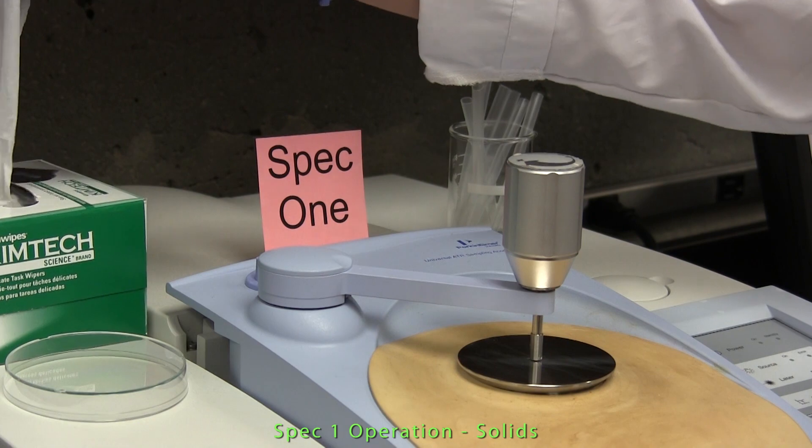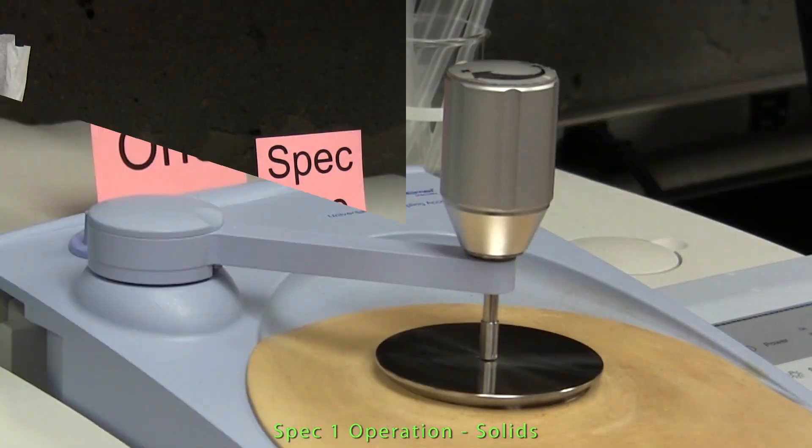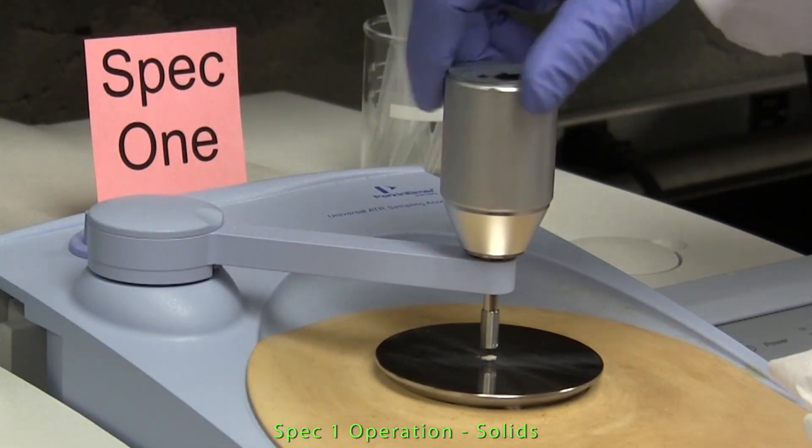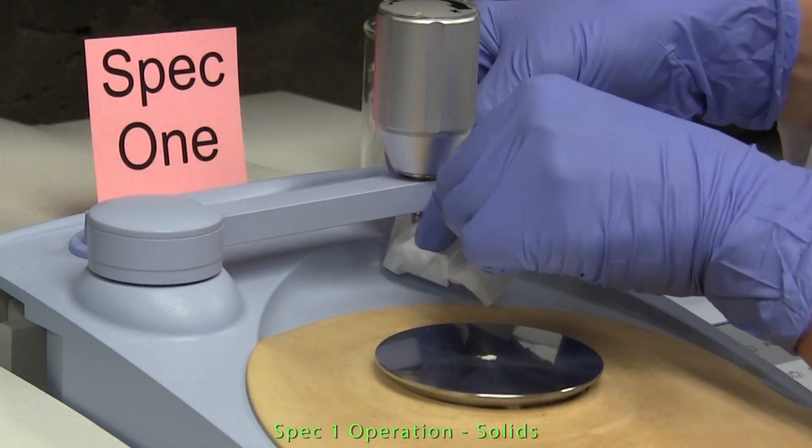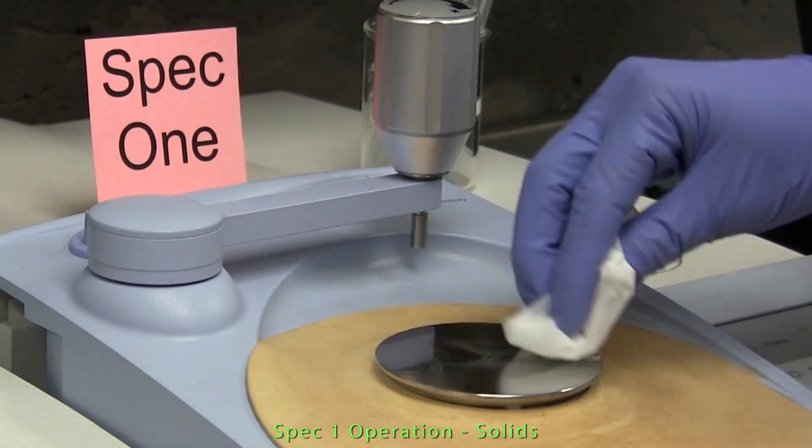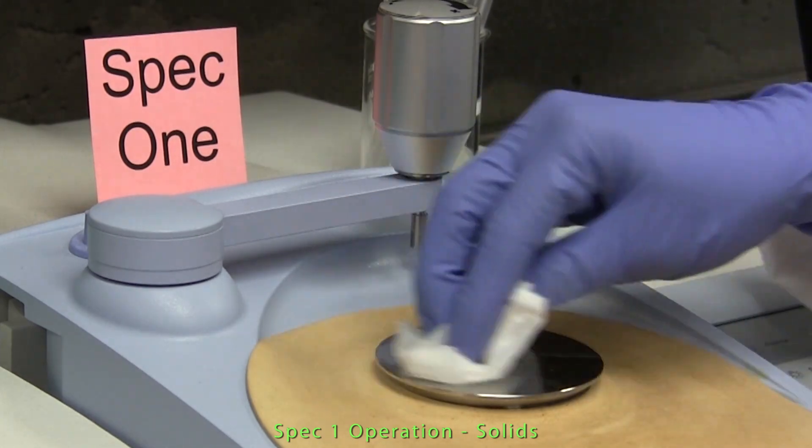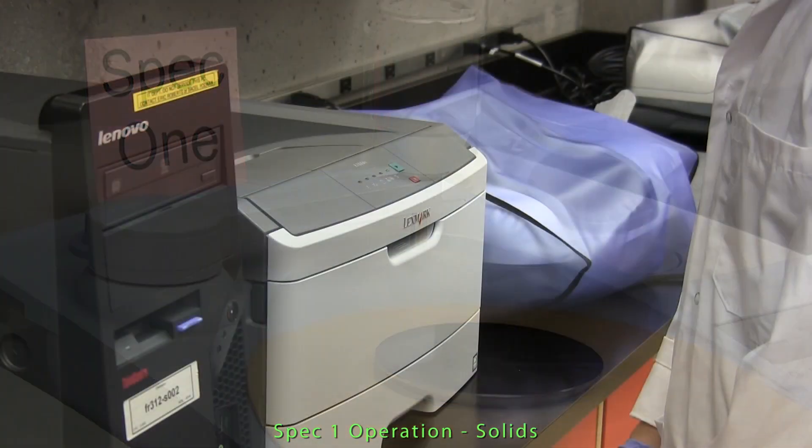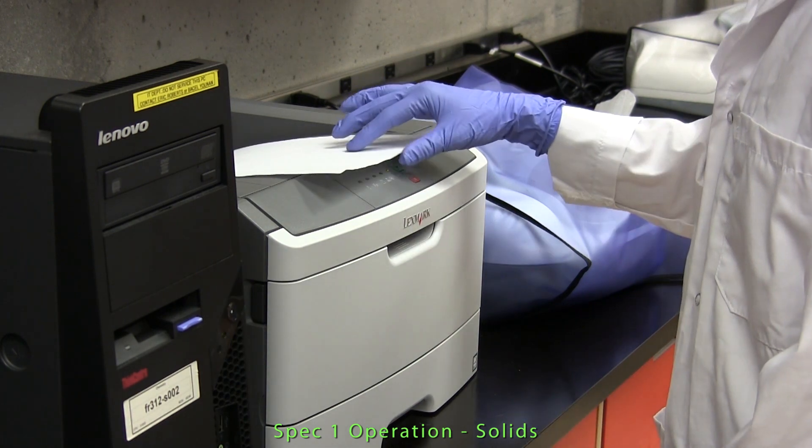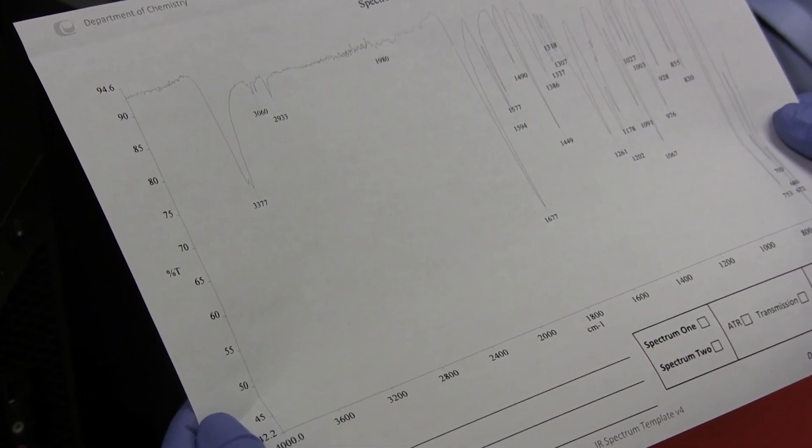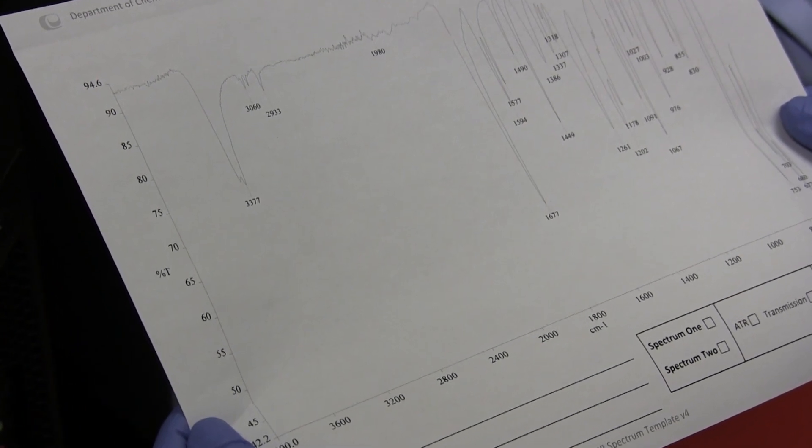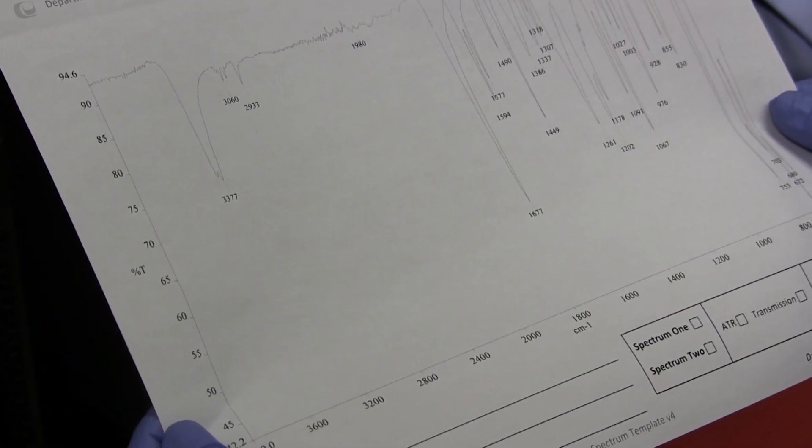While printing is being processed, you will be prompted to remove your sample and clean the mounting plate and crystal with an alcohol-moistened tissue. Now the spectrum can be collected from the printer. Details about the sample and instrumental parameters can be entered in the tables provided on the hard copy of the spectrum.